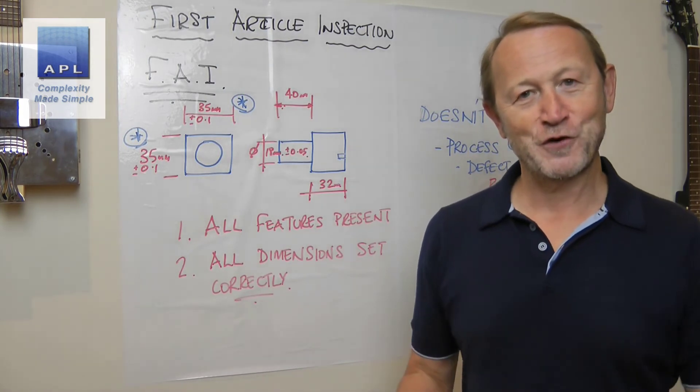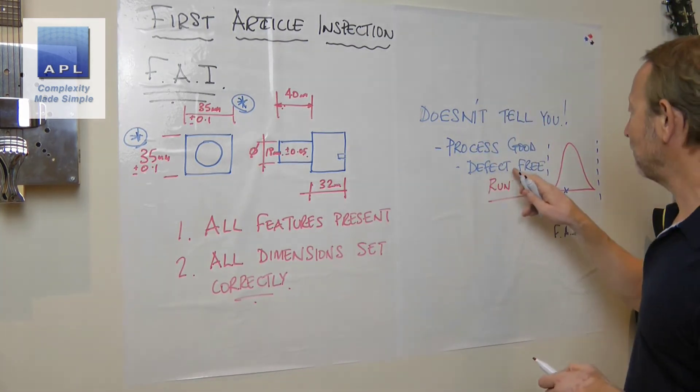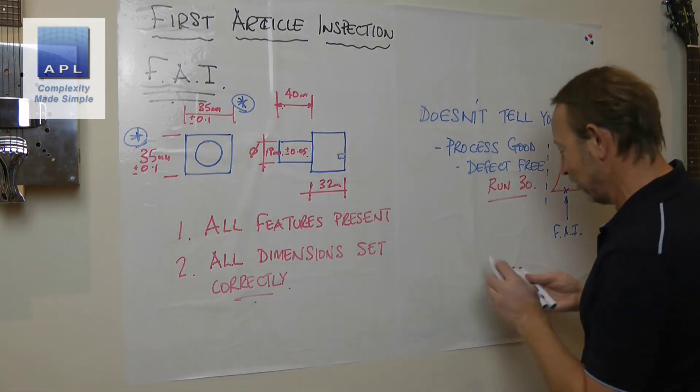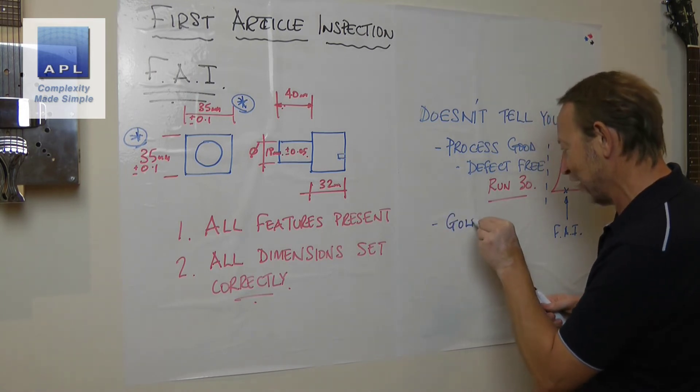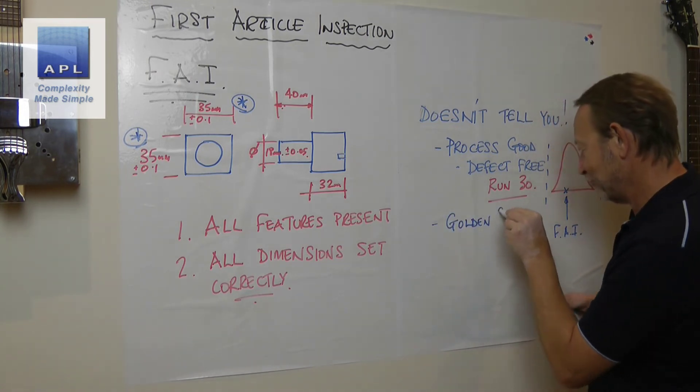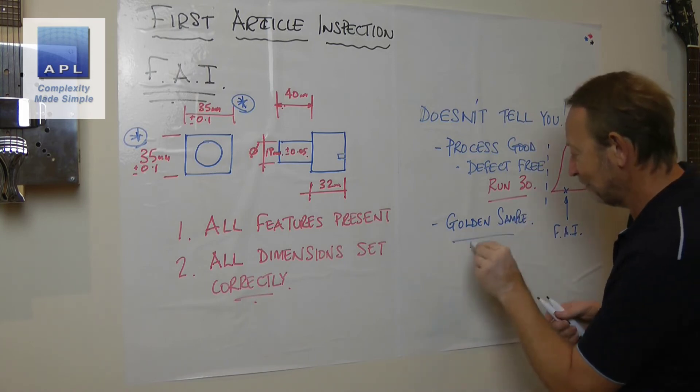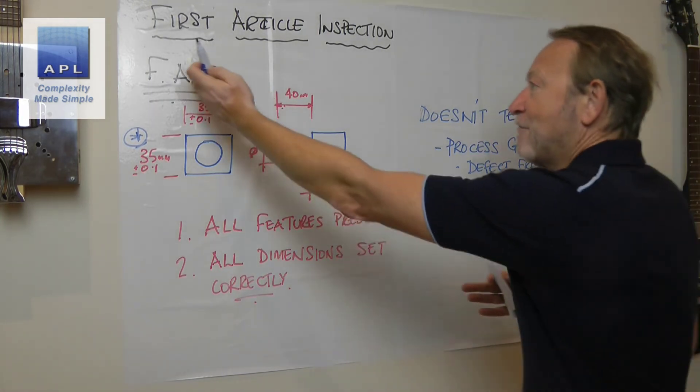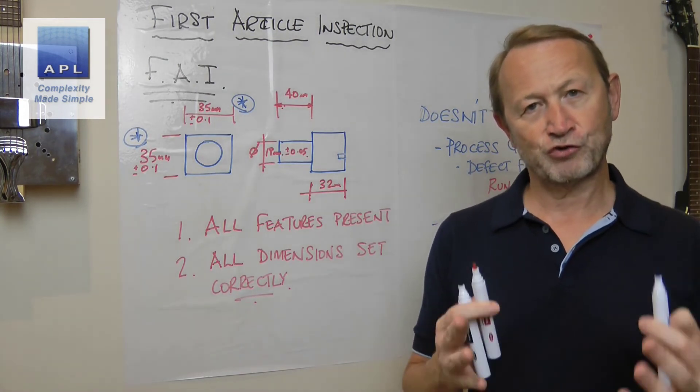Once you've done that, your First Article is done. Too many people are going, 'Oh, it tells me my process is defect-free because everything was inside the tolerance.' What else do they think? They treat it as a golden sample. That's another one. They're giving this little process far too much credence.